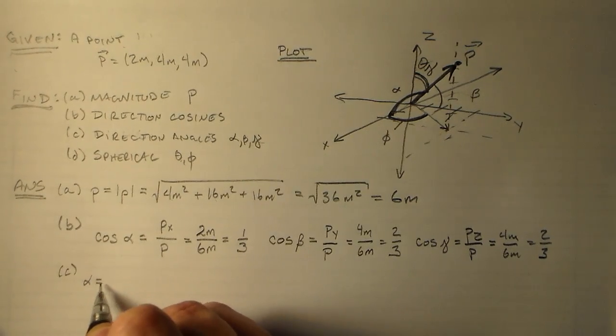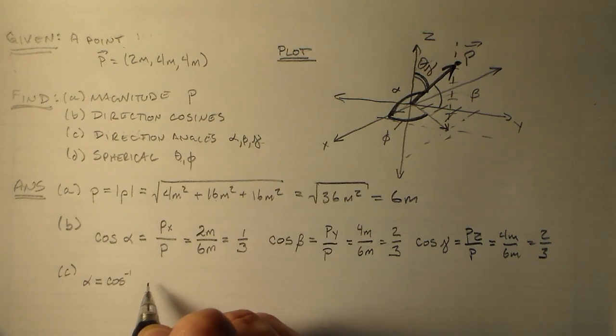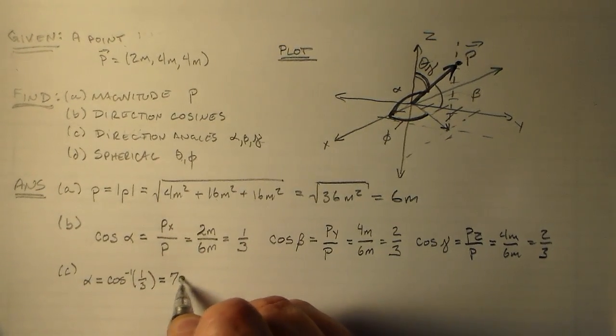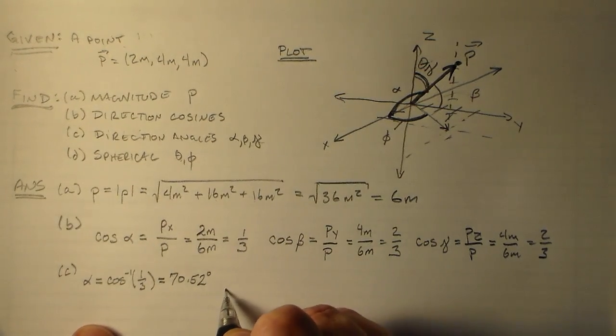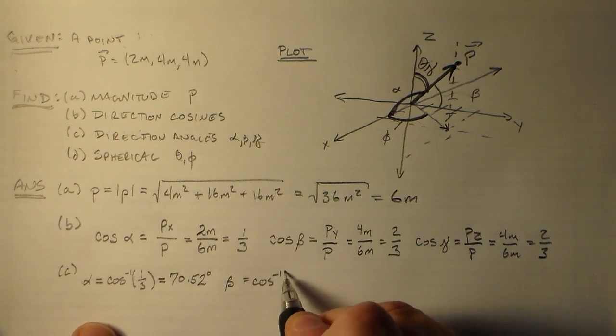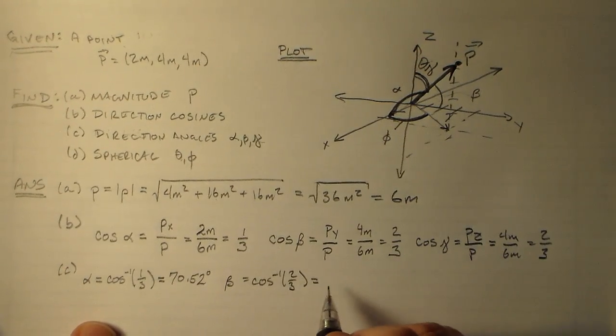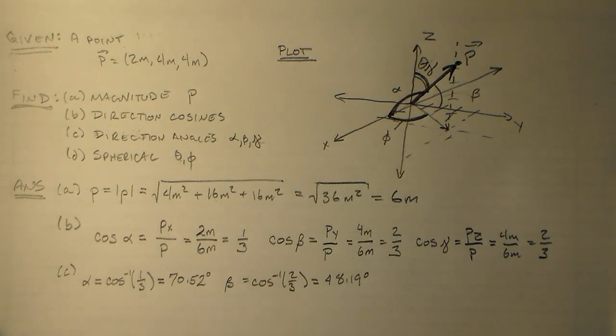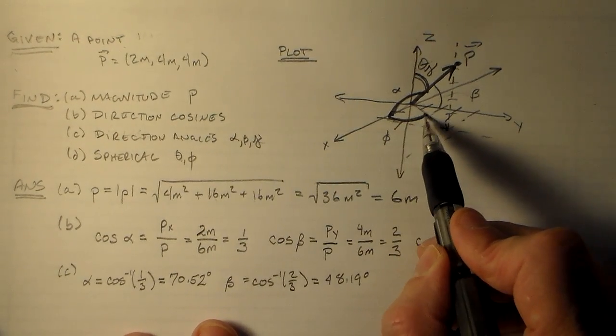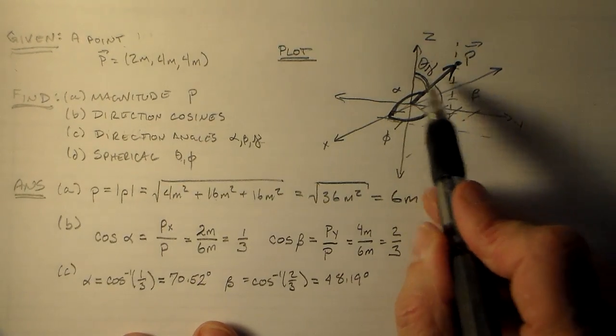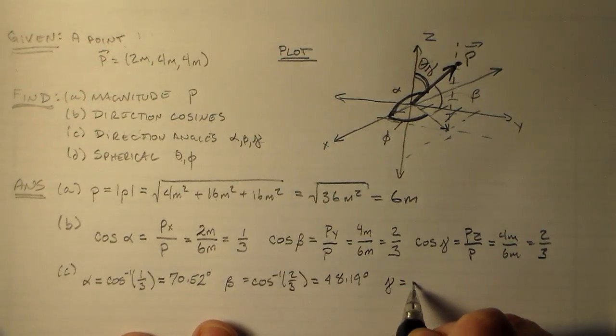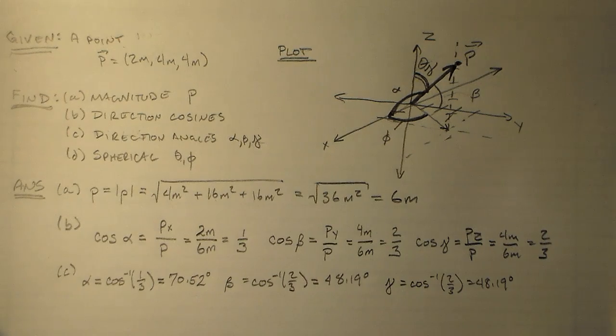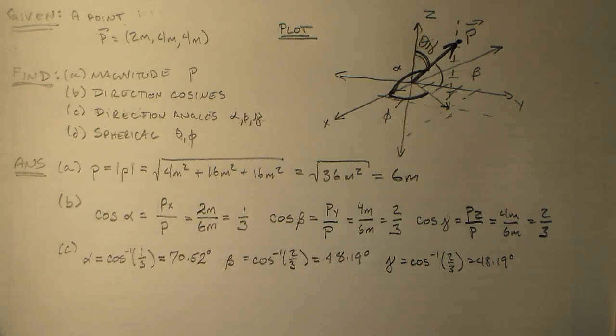And to find these actual angles, all we have to really do is take the arc cosine, the inverse cosine. So arc cosine of 1 third is, according to my calculator, 70.52 degrees. Beta is equal to the arc cosine of 2 thirds as well, py over p, and so this guy is 48.19 degrees. This is the long one, right? This guy is much larger than these other two. These other two have to be the same because these components are the same. So gamma is equal to the arc cosine of 2 over 3, which is 48.19 degrees. Nothing complicated at all. Just some rules to follow, and you'll get to follow them.